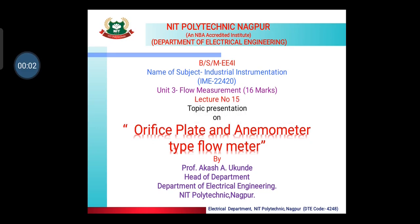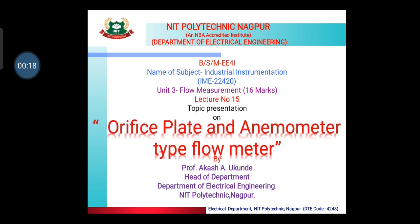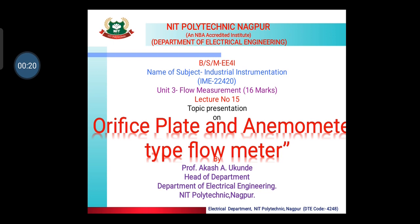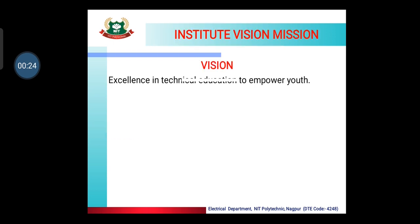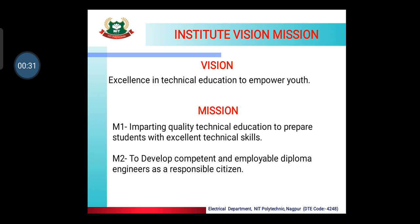Hello friends and welcome to the online teaching learning material. Our subject is Industrial Instrumentation, IME 22420. We are on Unit Number 3, that is Flow Measurement, which carries 16 marks. Our today's lecture number is 15. The institute's vision is excellence in technical education to empower youth, and on the basis of that there are three different missions of the institute.